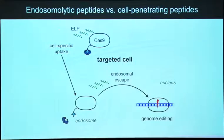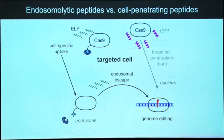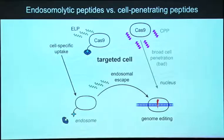We can use these ELPs in trans - just putting them in solution with Cas9 - and hopefully if they get taken up, they can open the endosome and promote Cas9's escape. I also want to note there's a related molecule called a cell-penetrating peptide, which tends to be positively charged and hydrophobic all the time. This is the sort of thing that would override molecular targeting and get you into a cell that doesn't have the receptor, even without the molecular targeting agent attached.